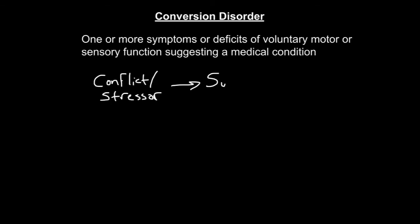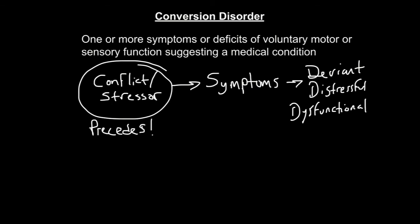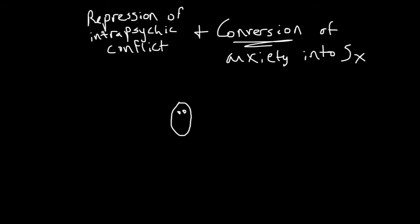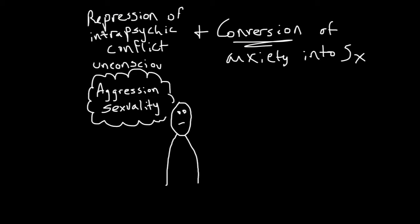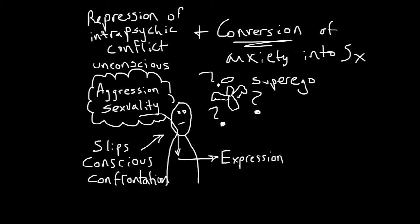In conversion disorder, one or more symptoms or deficits of voluntary motor or sensory function suggest a medical condition. This always precedes conflicts or stressors. It's not intentionally produced and causes significant distress or impairment in social, occupational, or other important areas of functioning. Psychoanalysts explain that conversion disorder is caused by repression of unconscious intrapsychic conflict and conversion of anxiety into a physical symptom. There is conflict between an instinctual impulse, for instance aggression or sexuality, and the prohibitions against its expression. The symptoms allow partial expression of the forbidden wish or urge but disguise it so that patients can avoid consciously confronting their unacceptable impulses.